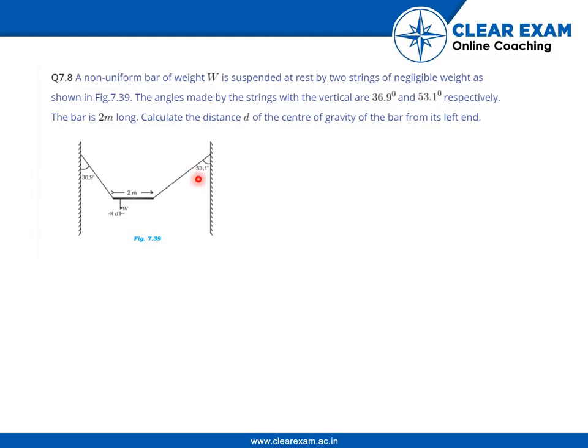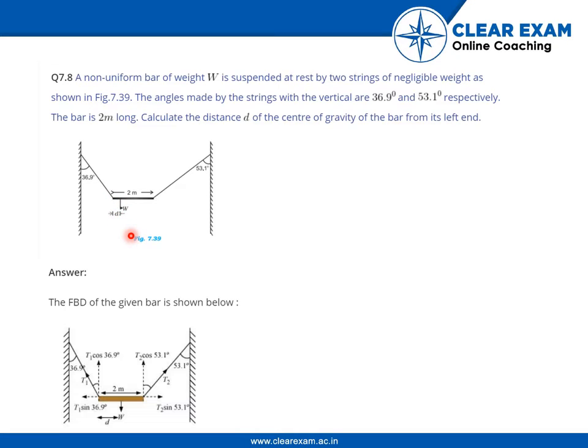So, this is the figure. This is angle 36.9 degrees, it is 53.1 degrees and this is 2 meters long and the weight is acting downwards, that is capital W. The distance from this particular point to the weight is small d. So, the free body diagram of the given bar is shown here.